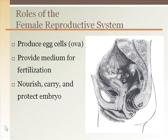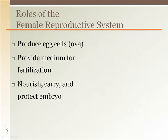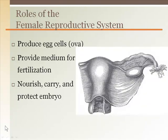The female reproductive system is designed to produce an egg and protect and nourish a baby. The ovaries develop the gametes or eggs containing 23 chromosomes, which is half of what it takes to make a person. Once the egg is ejected from the ovary, it is then available for fertilization. If fertilized, it implants into the lining of the uterus and develops into an embryo. Each of these steps have specific requirements in order to be successful, which are all timed and regulated through varying hormone levels.